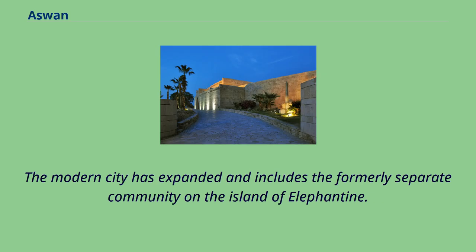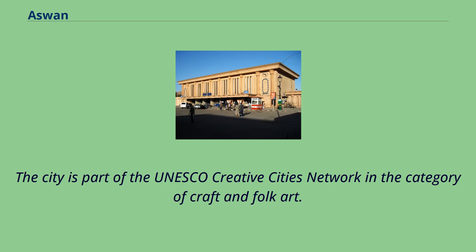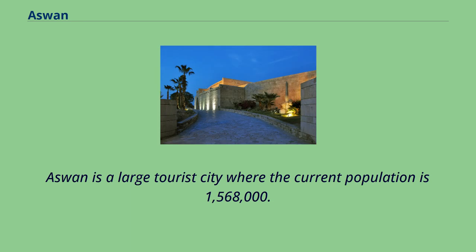The modern city has expanded and includes the formerly separate community on the island of Elephantine. The city is part of the UNESCO Creative Cities Network in the category of craft and folk art. Aswan is a large tourist city where the current population is 1,568,000.